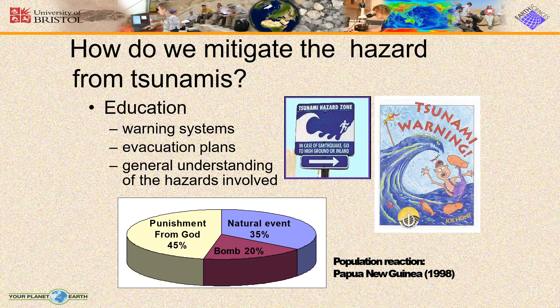How do we mitigate the hazard from tsunamis? By education — that is warning systems, evacuation plans, and a general understanding of the hazards involved. You can see reaction statistics of the population shown in another graph, and education is a must to mitigate the hazards from tsunamis.